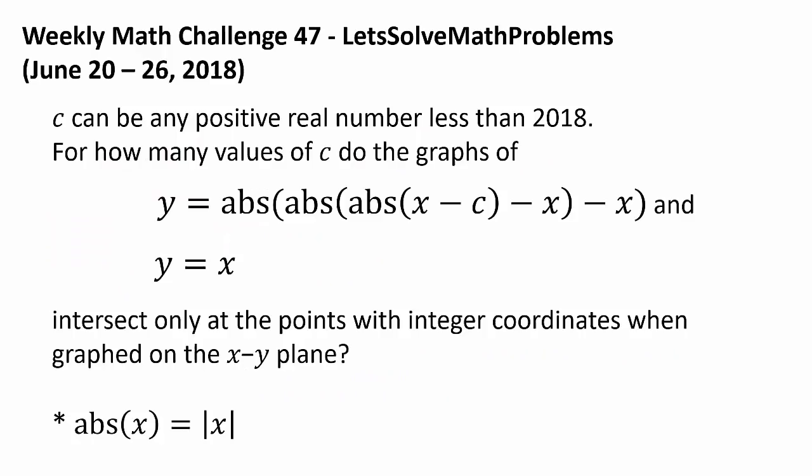Now let's get to this week's challenge. C can be any positive real number less than 2018. For how many values of C do the graphs of Y equals ||| X - C | - X | - X| and Y equals X intersect only at the points with integer coordinates when graphed on the XY plane?